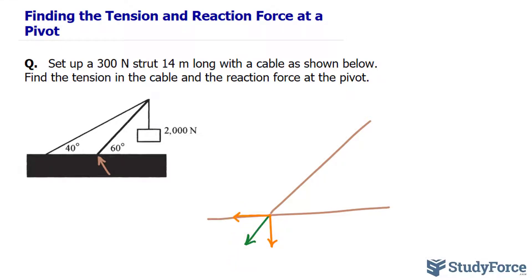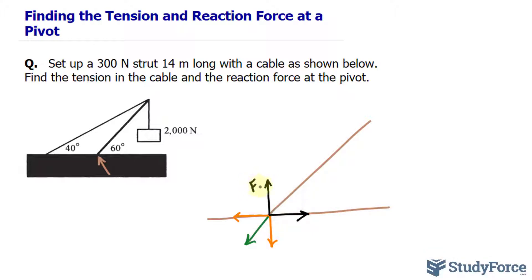We can break this down into its components, where we have one going directly down and one going to the left. If there's a force going down, there's an equal and opposite force going up. Similarly, if there's a force going in this direction, then there's an equal and opposite force going in the opposite direction.